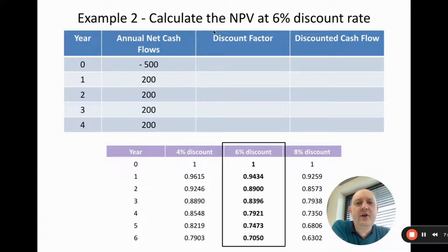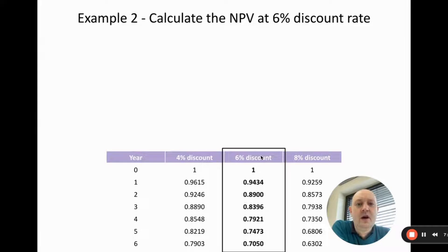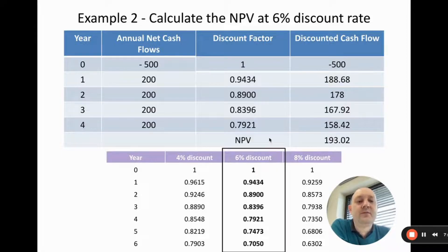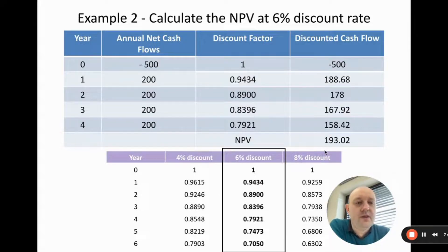If the question asks to calculate the NPV at six percent, we do the same process — take the six percent column from the table, write in those values (1, 0.9434, etc.), multiply each cash flow by the corresponding discount factor, and then sum the discounted cash flows. This gives an NPV of 193.